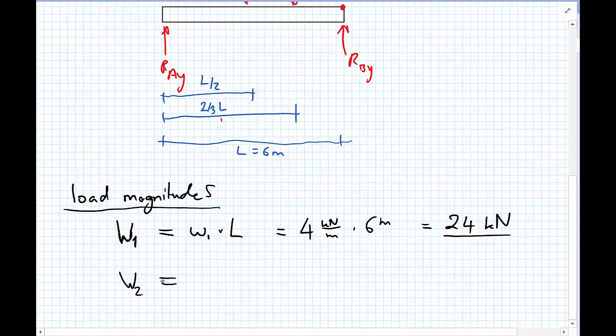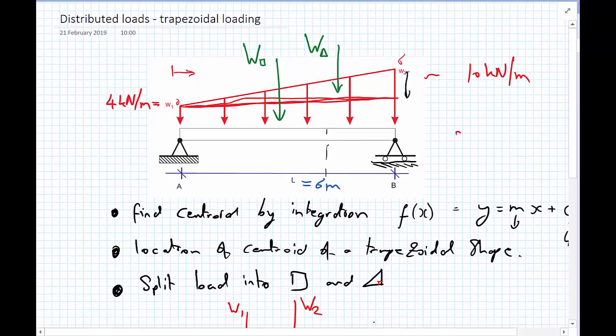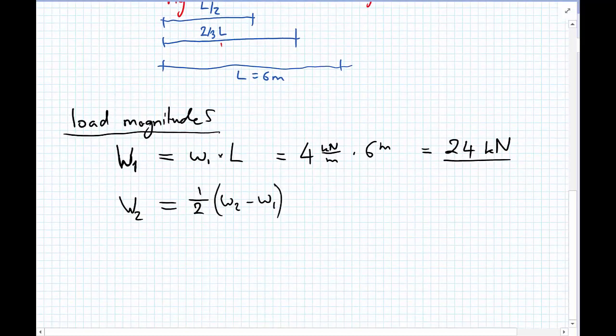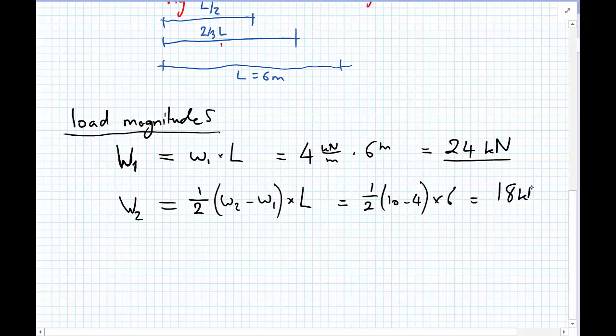For W1, capital W1 because it's the total load, this is a uniformly distributed load, so it's W1 multiplied by L, so that's 4 kilonewtons per metre multiplied by a length of 6 metres, which equals 24 kilonewtons. For W2, slightly more complicated, but we have one half of W2 minus W1, so that gives us this distance here. We're doing the half because it's a triangle, multiplied by the length gives us the area of the triangle. So this equals one half of 10 minus 4. So that's the average intensity along this beam.